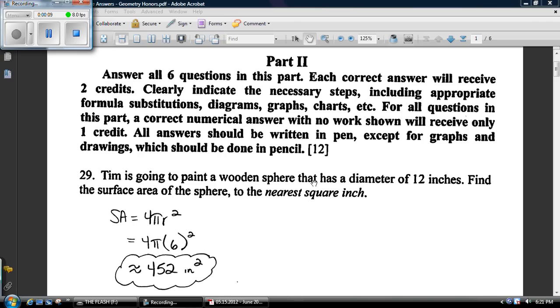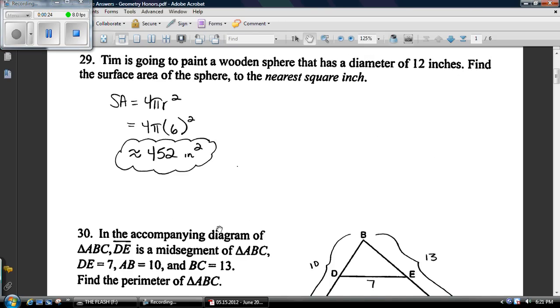Here's 29. Tim's going to paint this wooden sphere, basically find the surface area. This is a formula off your reference table, given to you on the exam. All you've got to do is plug in. What's R? R is the radius. Diameter is 12, so the radius is 6. Simple as that. Use your calculator and plug in.